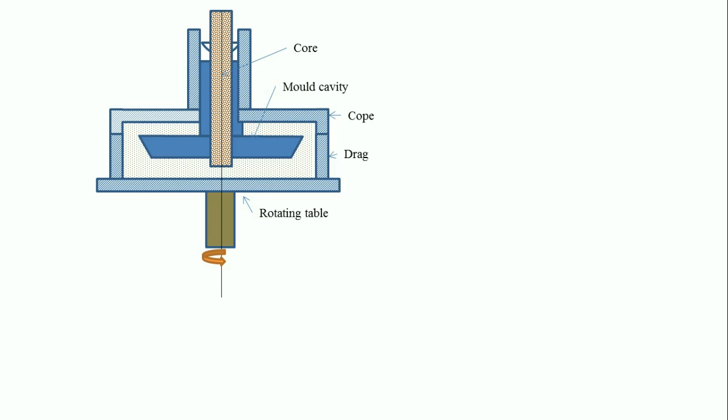Let's look at this diagram where the whole process is depicted. The core is there and mold cavity is prepared with the help of cope and drag and the whole assembly is rotated with the help of a rotating table.